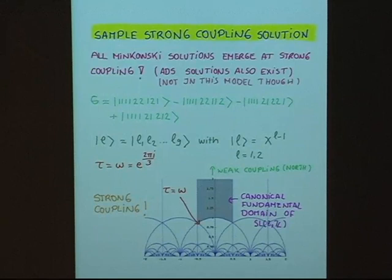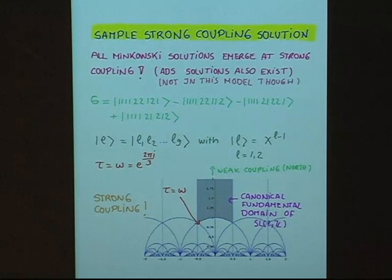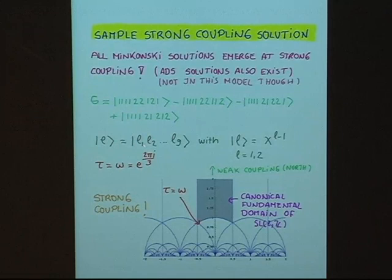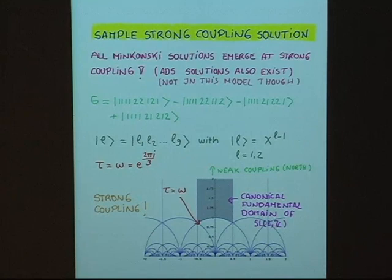Let us look at a sample solution that we have found. First, we realized that all Minkowski solutions we could find are at strong coupling. Not in this particular model, but in a second model, we also found AdS solutions that exist at strong coupling. The precise form of the configuration giving Minkowski solutions looks like this example. The tau for this solution is given by 2πi/3. Looking at the canonical fundamental domain, this solution is sitting right at the boundary, so tau equal to ω is as strong coupling as it can be.